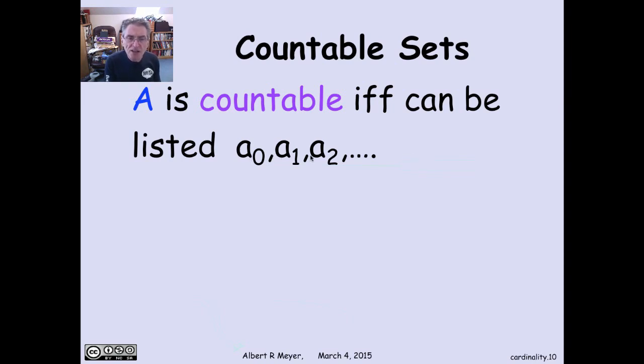So there's a list of all of the elements of A in which every element in A appears at some point. You can count up to any given element of A, and every element of A you will eventually get to. It's just a matter of listing it.